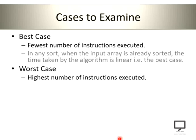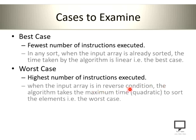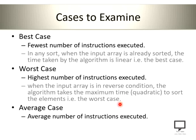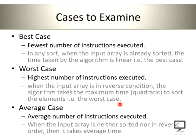The second case is the worst case, where it requires the highest number of instructions to be executed. For example, if the array is in reverse order and I want to sort it in ascending order, this is the worst case because it takes maximum time and executes the maximum number of instructions. The third case is the average case, where an average number of instructions are executed. When the input array is neither sorted nor in reverse order — it is generalized — it requires an average number of instructions.